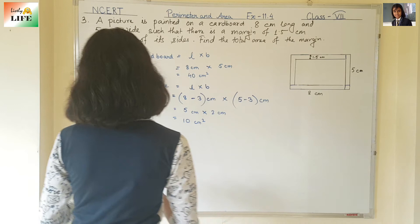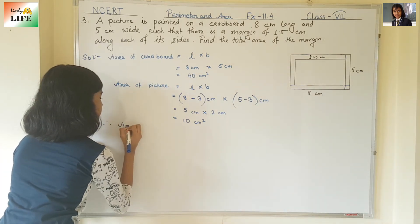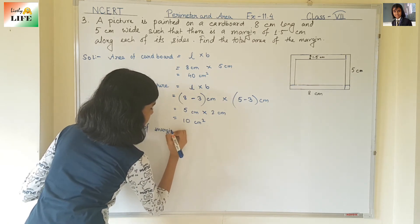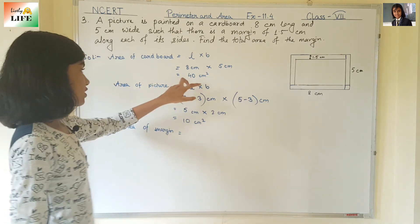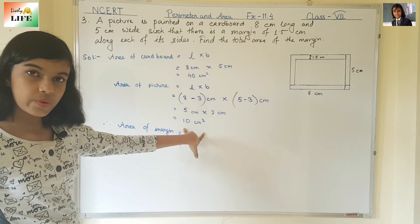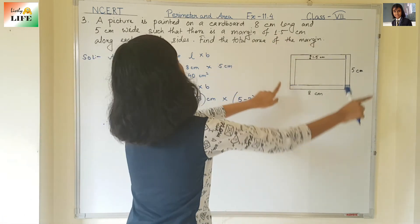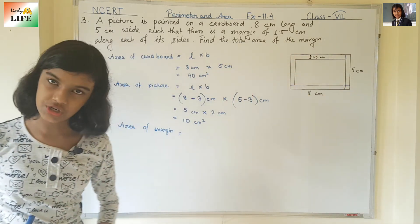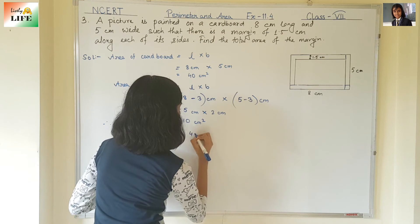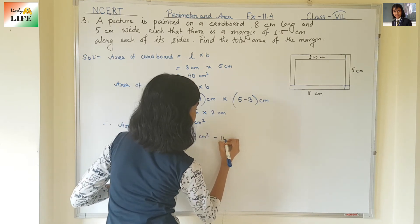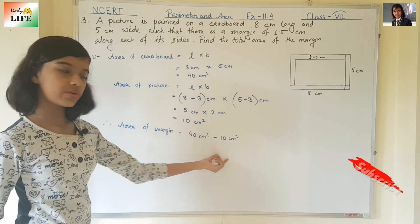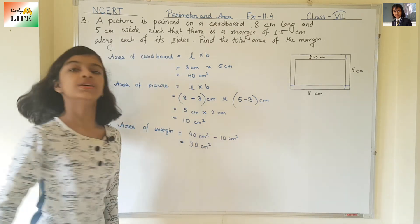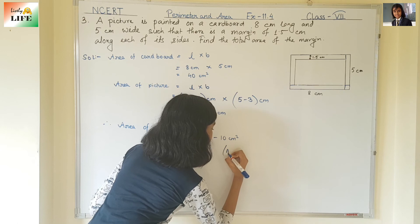Now let's find out the area of the margin. Area of margin = area of cardboard minus area of picture = 40 cm² minus 10 cm². 40 minus 10 is 30. So the area of the margin is 30 cm².